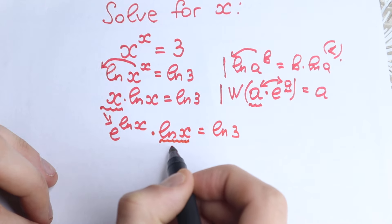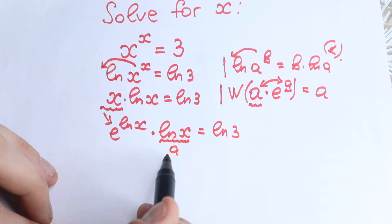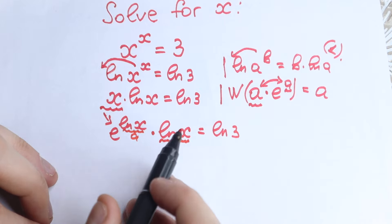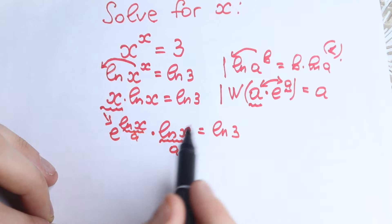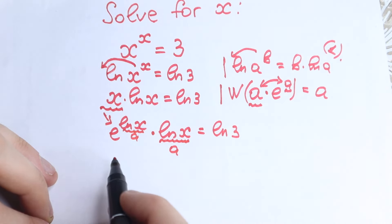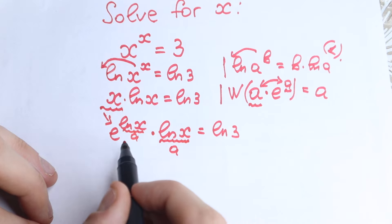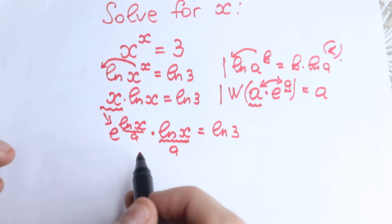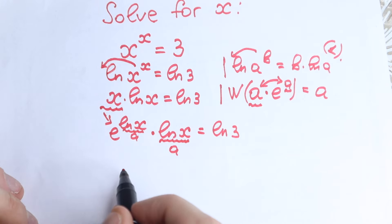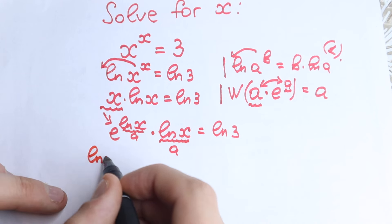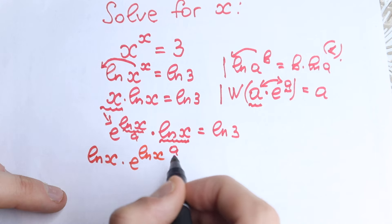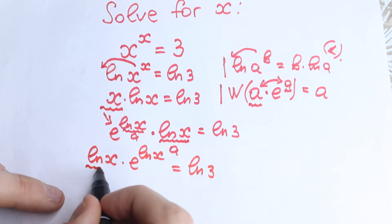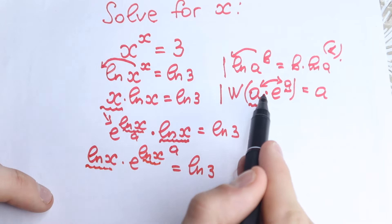Now, let's think of ln(x) as our 'a'. We have ln(x) in the exponent and ln(x) as the multiplier — both are the same expression. Rearranging the order of multiplication, we get: ln(x) times e^(ln x) = ln(3). This matches the Lambert W form exactly: a times e^a, where a = ln(x).